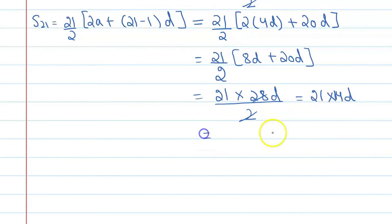So after multiplying it, we will get 294d. Now we need to find s5 ratio s21. From here we will get 30d upon 294d. This d and d will get cancelled.